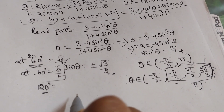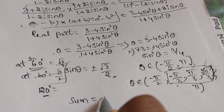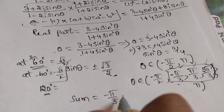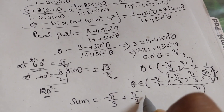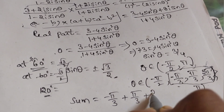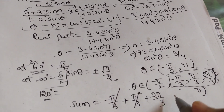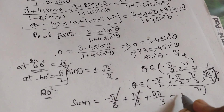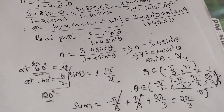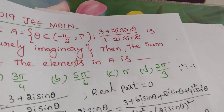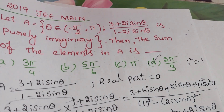We consider only these three elements and add them. The sum equals minus pi by 3 plus pi by 3 plus 2pi by 3. The first two cancel, giving the answer as 2pi by 3. Checking the options, option D is correct: 2pi by 3.